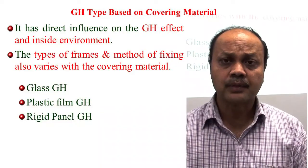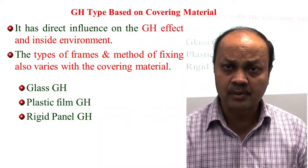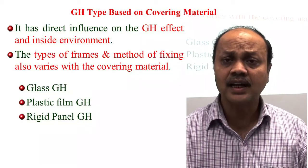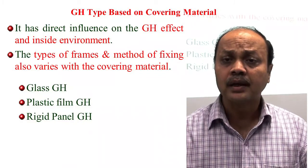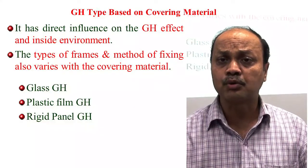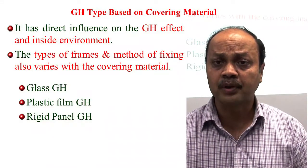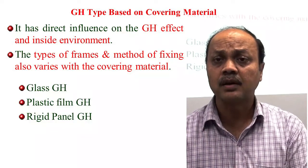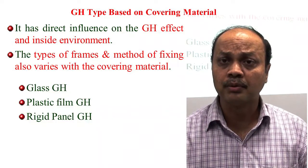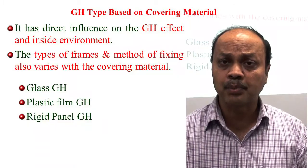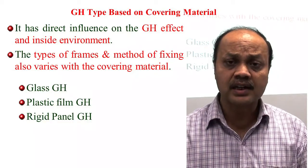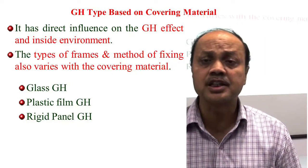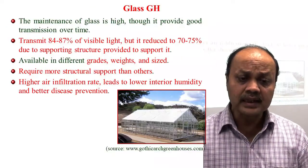Based on the covering material, different types of cladding materials affect the inside greenhouse environment. Depending on the type of frame and cladding material, the fixing method differs — for example, the fixing technique for glass differs from that for plastic film. There are three main types: glass greenhouse, plastic film greenhouse, and rigid panel greenhouse.